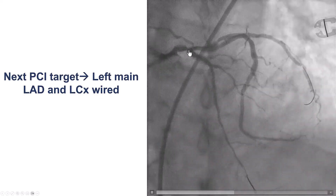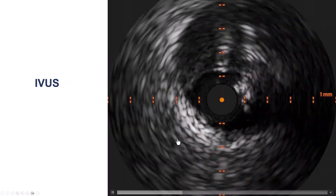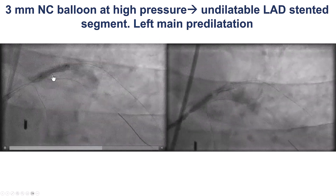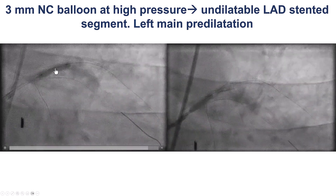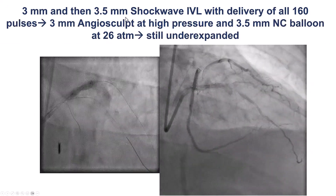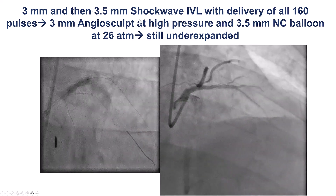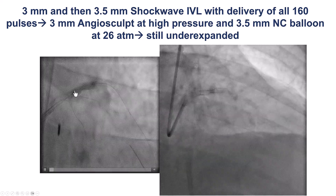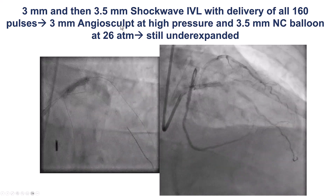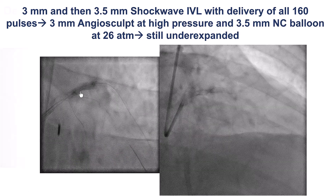We then switched our attention to the left. We wired both the LAD as well as the circumflex, and then performed intravascular ultrasound that showed the distal left main lesion. We then tried to predilate; however, despite going at high pressure — 28 atmospheres — we were unable to expand the proximal LAD stent. We then switched to intravascular lithotripsy and did several pulses with a 3.0 and then a 3.5 mm shockwave balloon. However, this did not achieve expansion. We then used a 3 mm angiosculpt and a 3.5 mm NC. Once again, we could not expand the proximal LAD lesion.